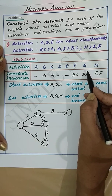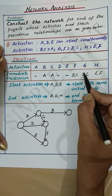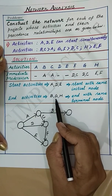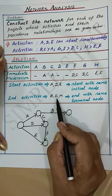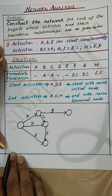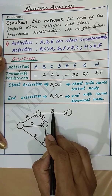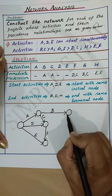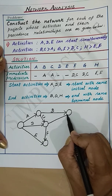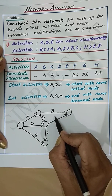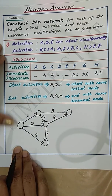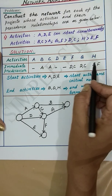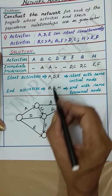Now activity G. Activity G also occurs after C and D, and we know that G is one of the end activities. Activity G should end where activity B ends — it starts after C and D end. This is activity G.